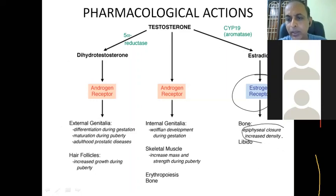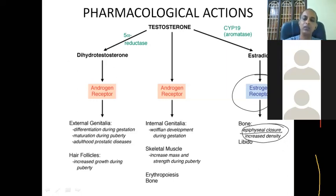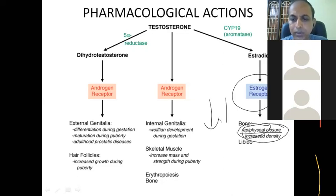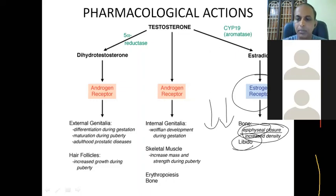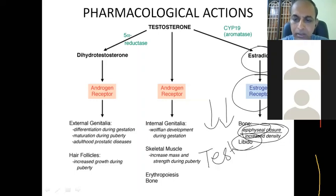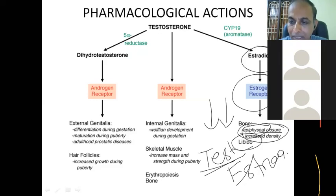Estrogen acts via the estrogen receptor, increasing bone length but also causing epiphyseal closure. This is why girls grow taller initially but stop growing around age 16-17, while males continue growing 2-4 more years. Libido is required in both sexes: in females it is because of estrogen, in males it is initiated by testosterone but the intensity depends on estrogen.